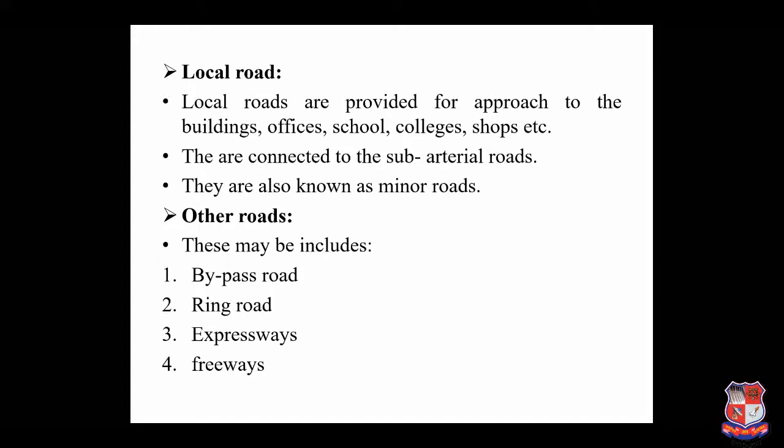Other roads may include: first, bypass road; second, ring road; third, expressway; and last, freeway. A bypass road is a road built specifically to go around a town or city, allowing through traffic to flow without interference from local traffic, directly reducing congestion in the built-up area and improving road safety.